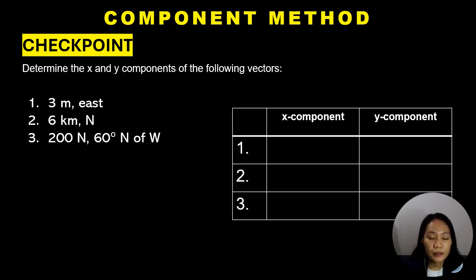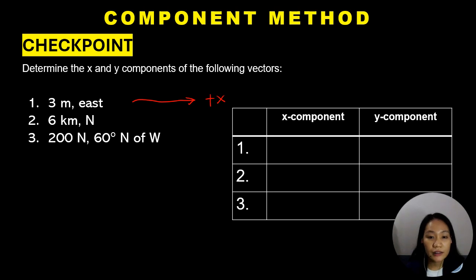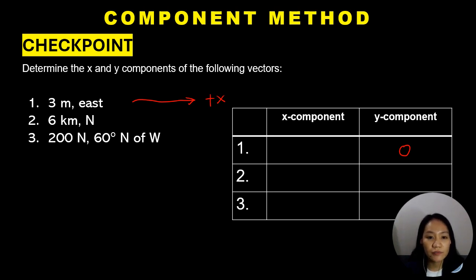For number 1, 3 meters east: if you visualize the vector, it is pointing to the right or to the east. Since this vector is directly along the x-axis, we can conclude that it doesn't have any y component. Since the vector is exactly along the horizontal axis, the value of the vector equals its x component — so the x component is 3 meters.